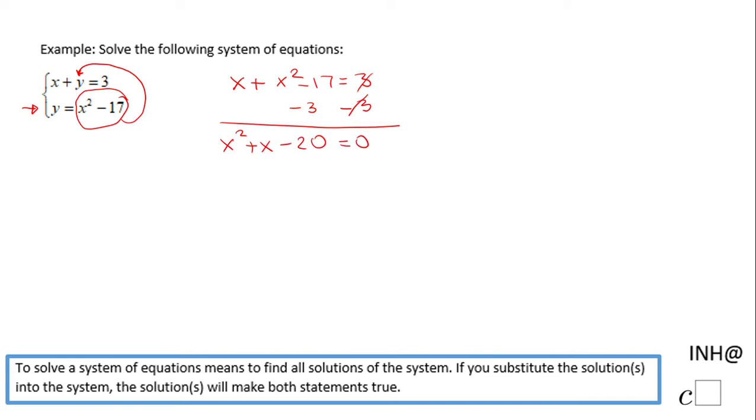Now this quadratic we can solve in different ways. I will use factoring. I'm looking for two numbers whose product is negative 20 and the sum is 1. Those two numbers are positive 5 and negative 4. So the factors are x plus 5 times x minus 4.